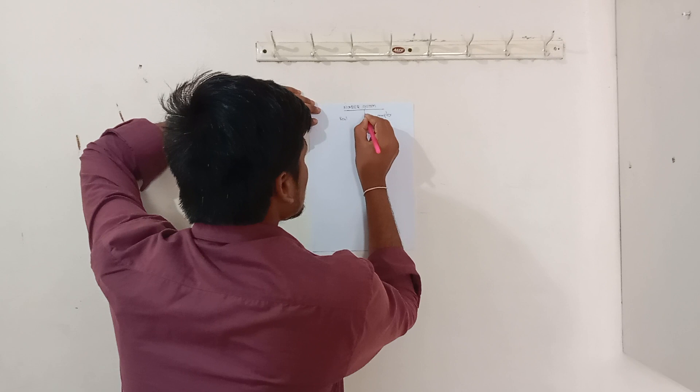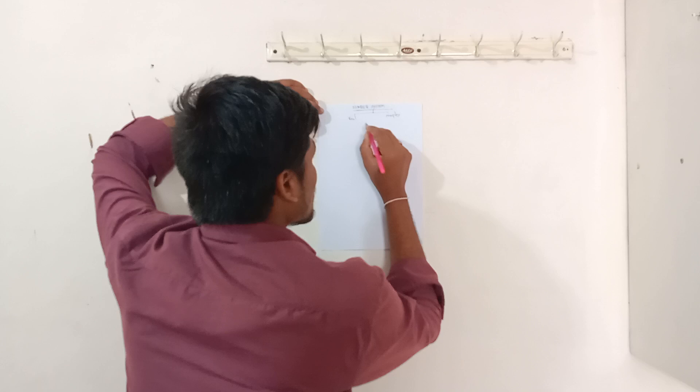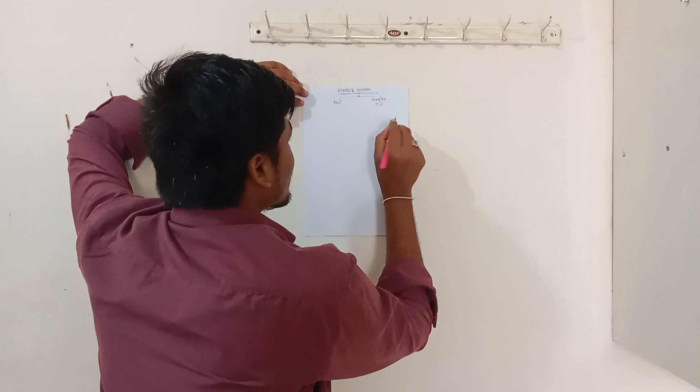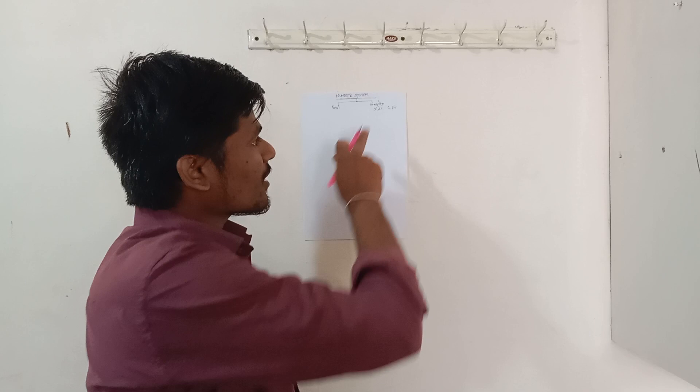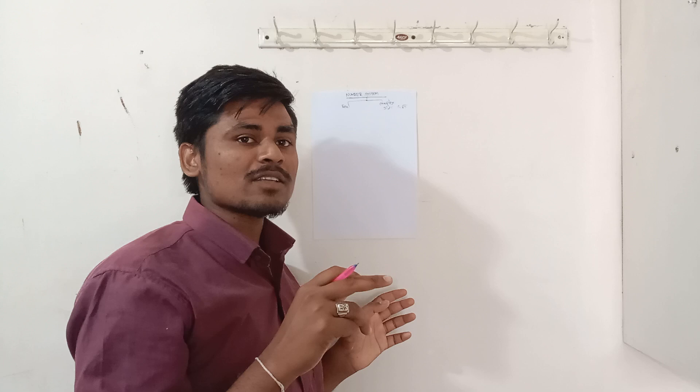Now we can discuss about complex numbers first. Complex numbers are numbers of the type 3i, 2i, and so on. Here i is equal to the square root of minus 1. We can study complex numbers in 8th class, 9th class, and so on.